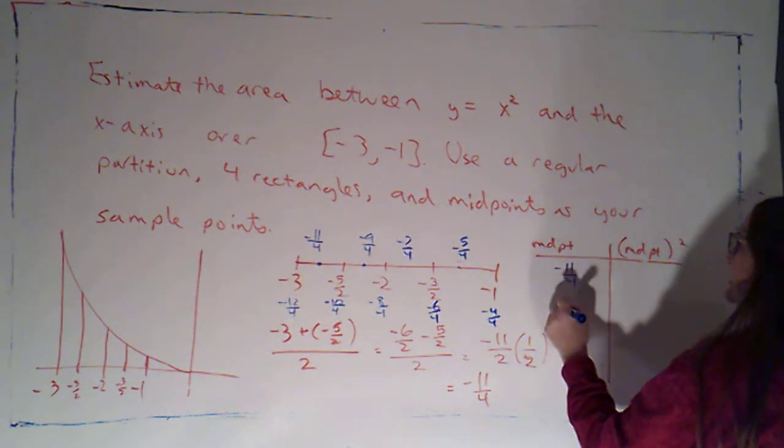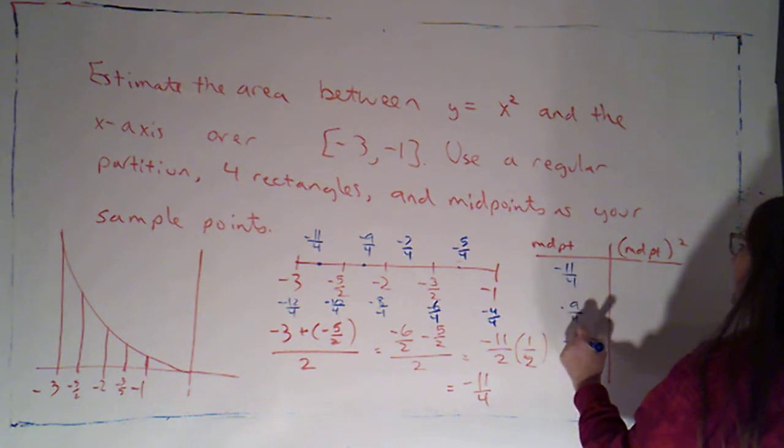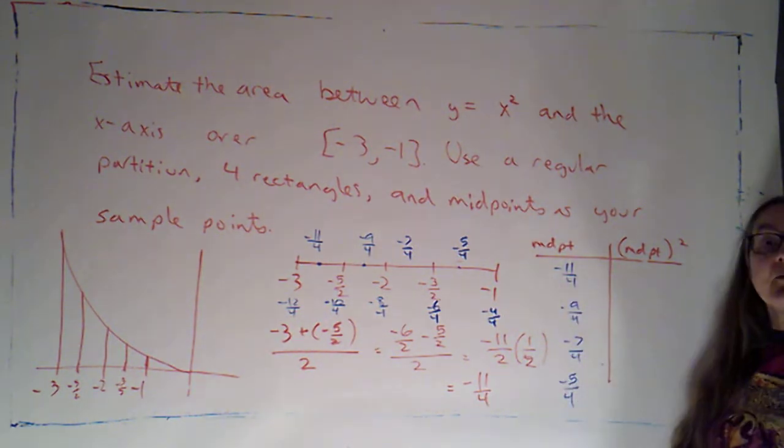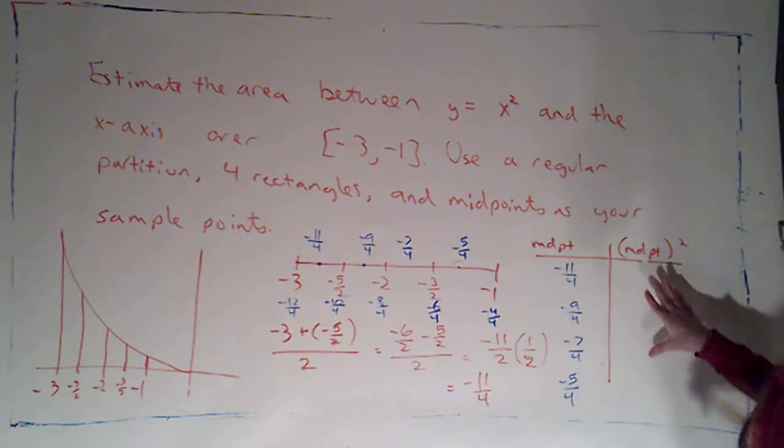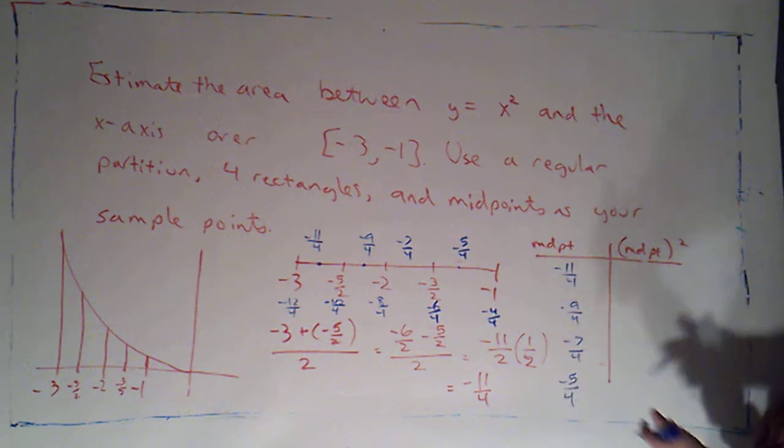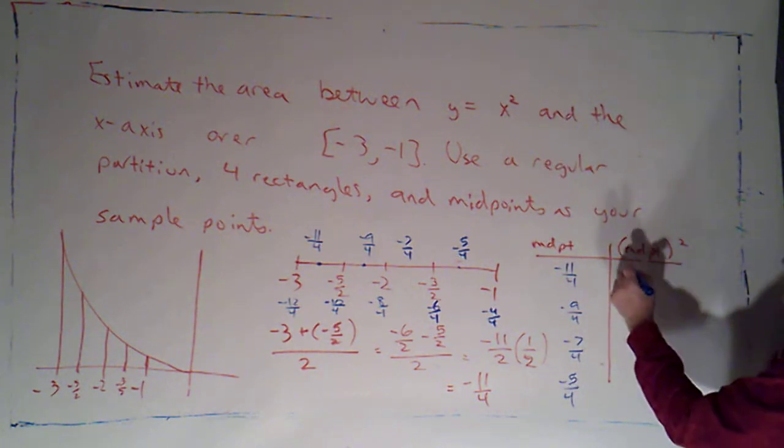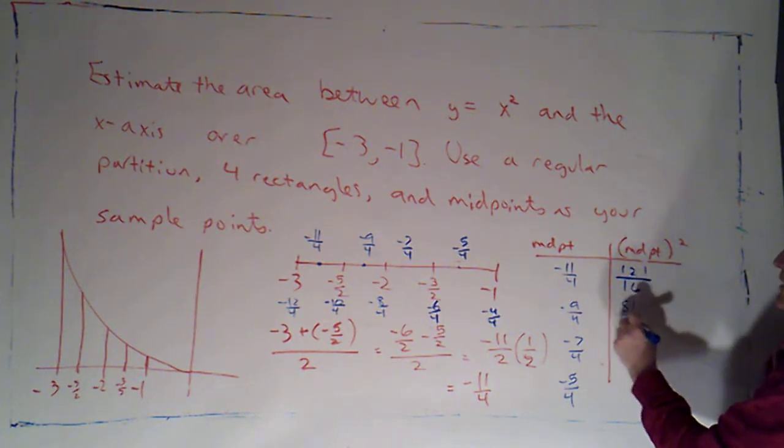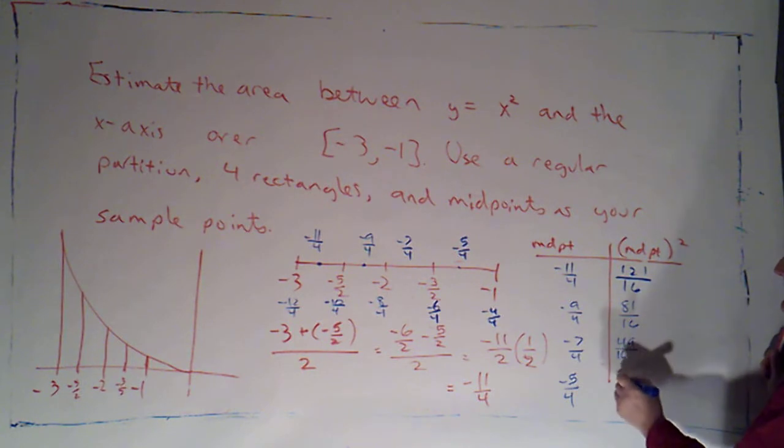So negative 11 fourths, negative 9 fourths, negative 7 fourths, and negative 5 fourths are my midpoints. The heights I'm going to get are those midpoints squared. They're what I get when I plug into this function. So this will be 121 sixteenths, this will be 81 sixteenths, this will be 49 sixteenths, and this will be 25 sixteenths.